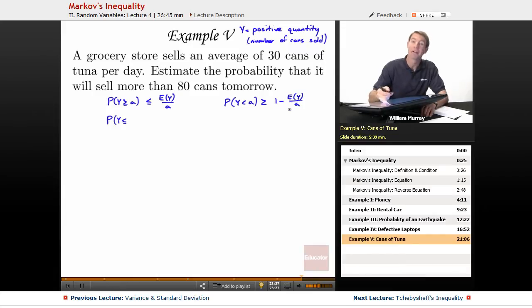So, we have to look at our problem and figure out which one of those is going to be relevant. In this case, we want the probability that it will sell more than 80 cans tomorrow, so that's a greater than or equal to. The probability that y is greater than or equal to 80 is less than or equal to the expected value.